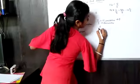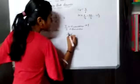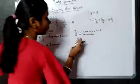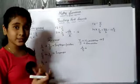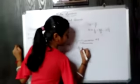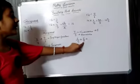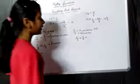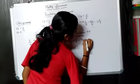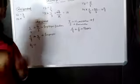Let us solve another one: 6 upon 5. First we find its reciprocal — 6 upon 5 becomes 5 upon 6. Here the numerator 5 is smaller and the denominator 6 is greater, so we call it a proper fraction. Because the numerator is smaller than the denominator, it is a proper fraction.